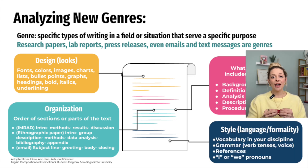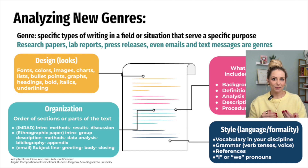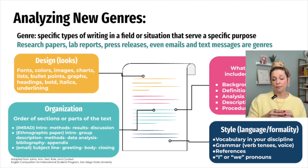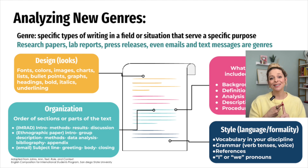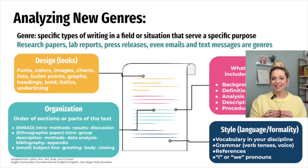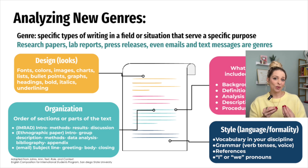And lastly, we have S for Style, which includes language and formality. In an academic piece of writing, we are going to be professional and formal. Stylistic choices include vocabulary in your discipline — also known as jargon — grammar like verb tenses and active or passive voice, the inclusion of references and citations, and the use of personal pronouns like I or we.